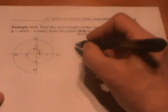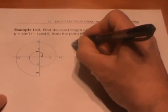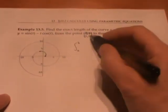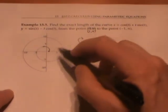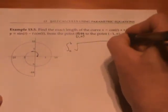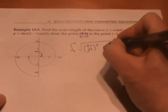We want to use our arc length formula, which is the integral from whatever t value we start at to whatever t value we end at. These are the coordinates we start and end at. We need to figure out what the corresponding t values are for our arc length formula.